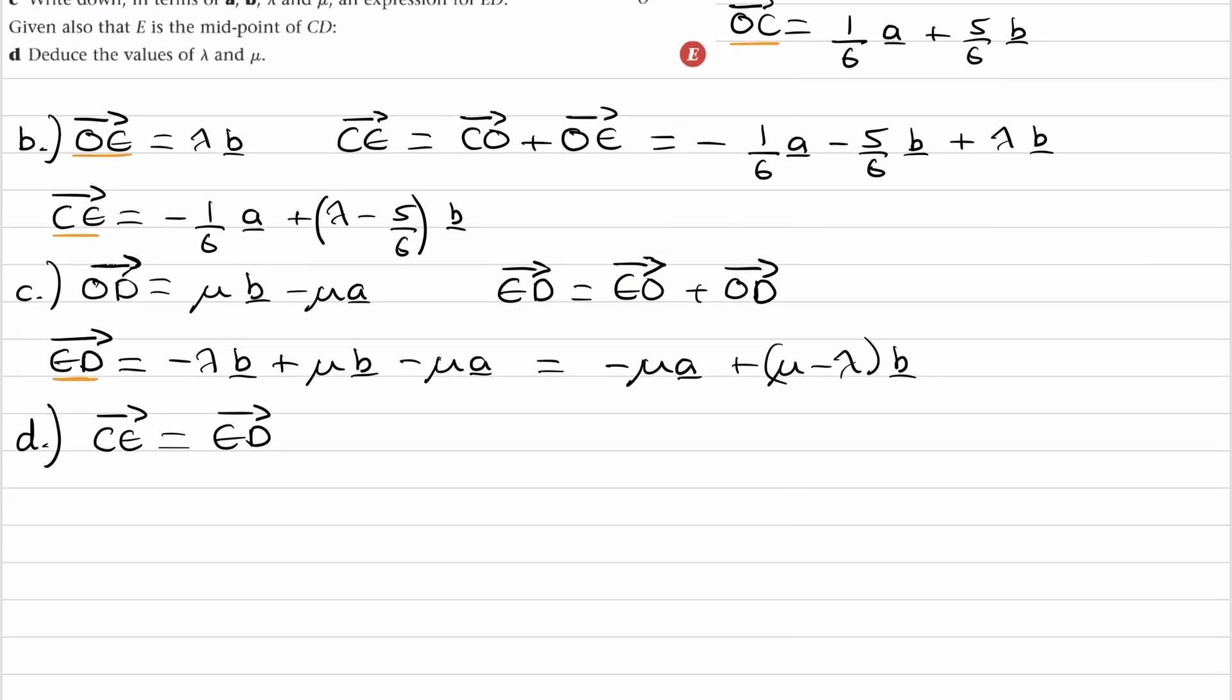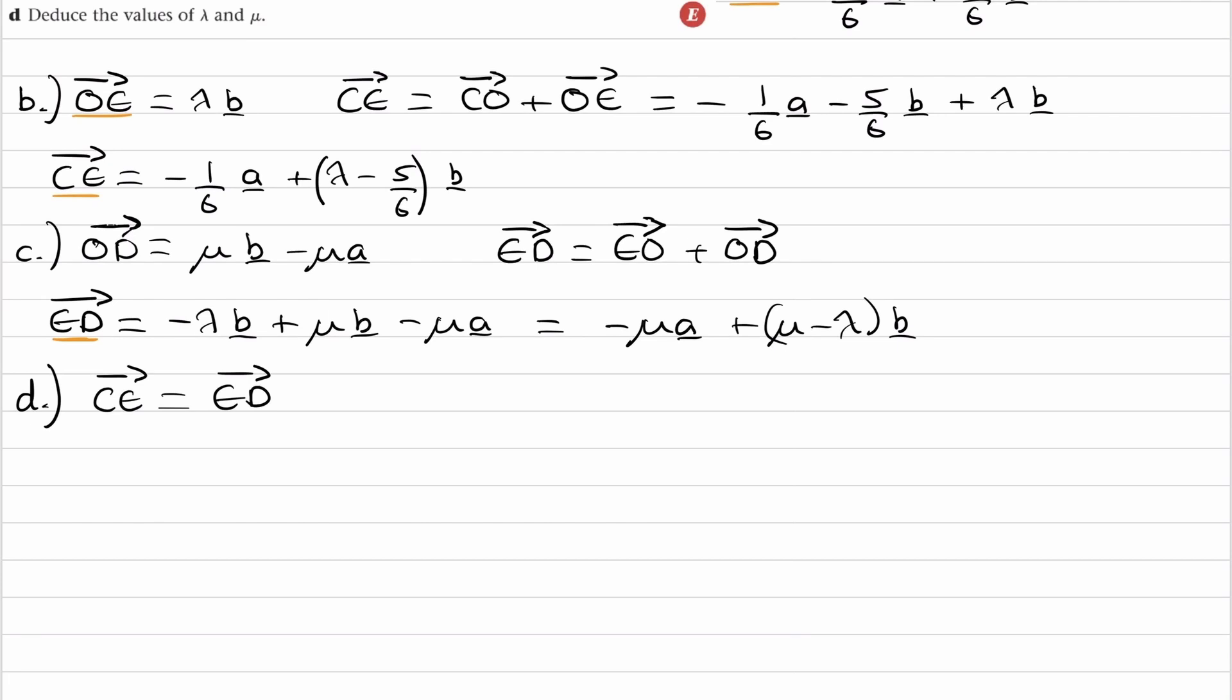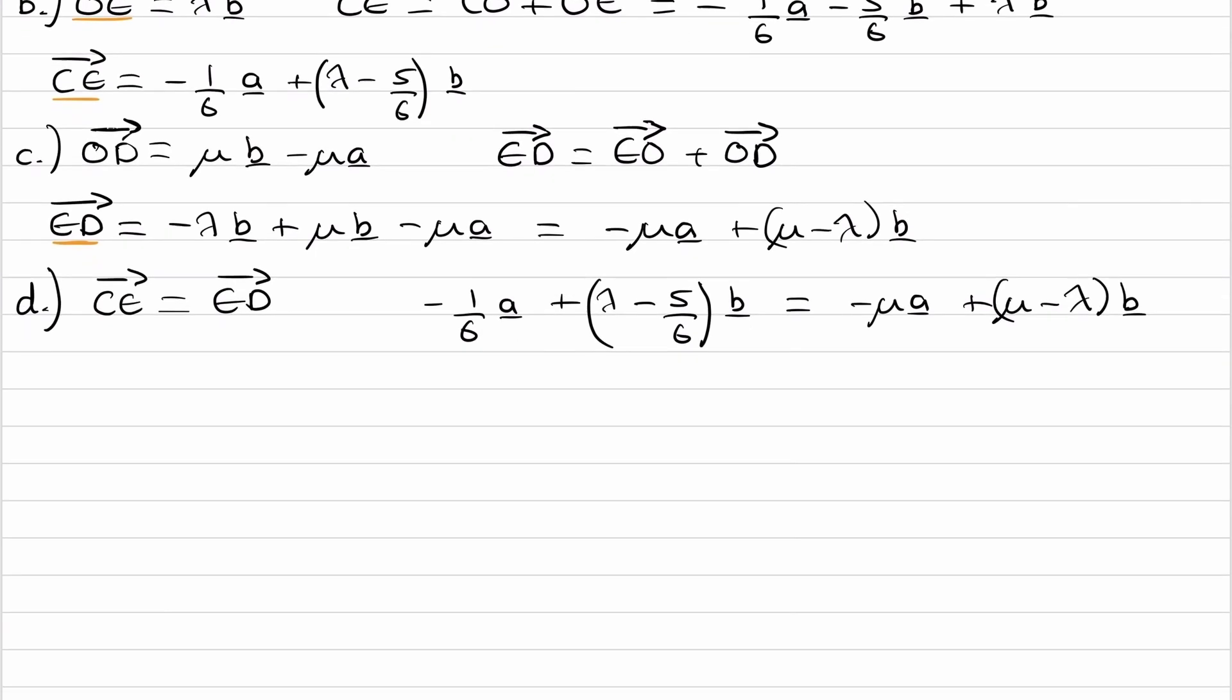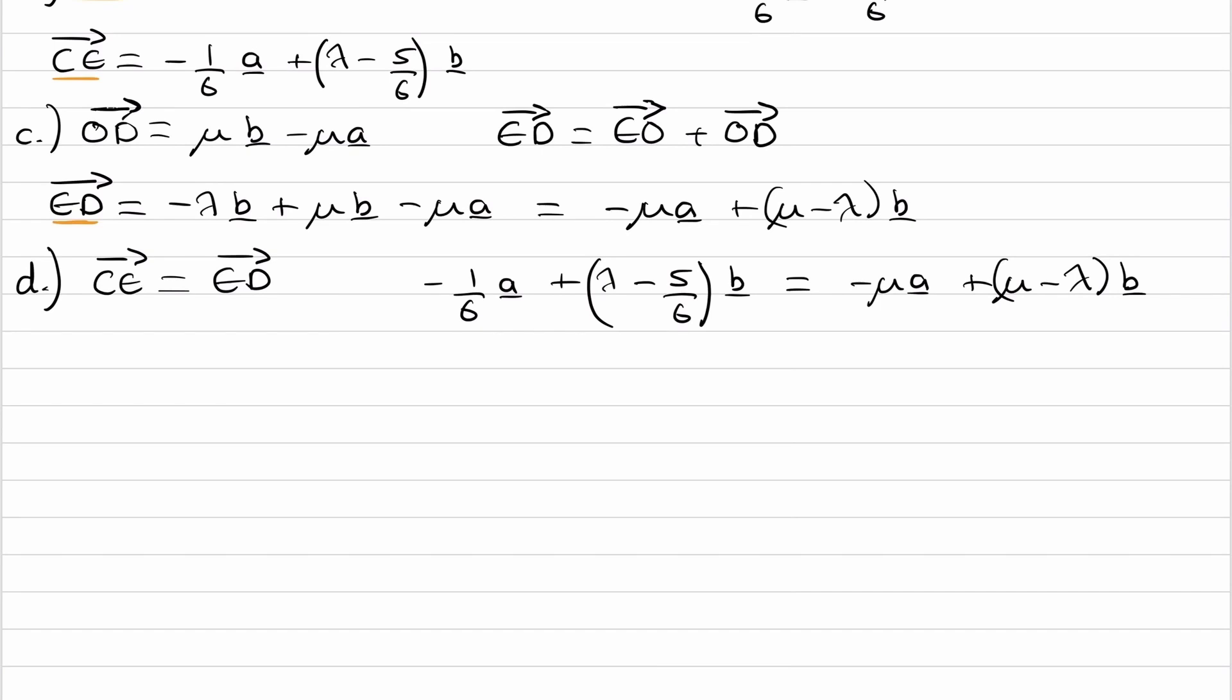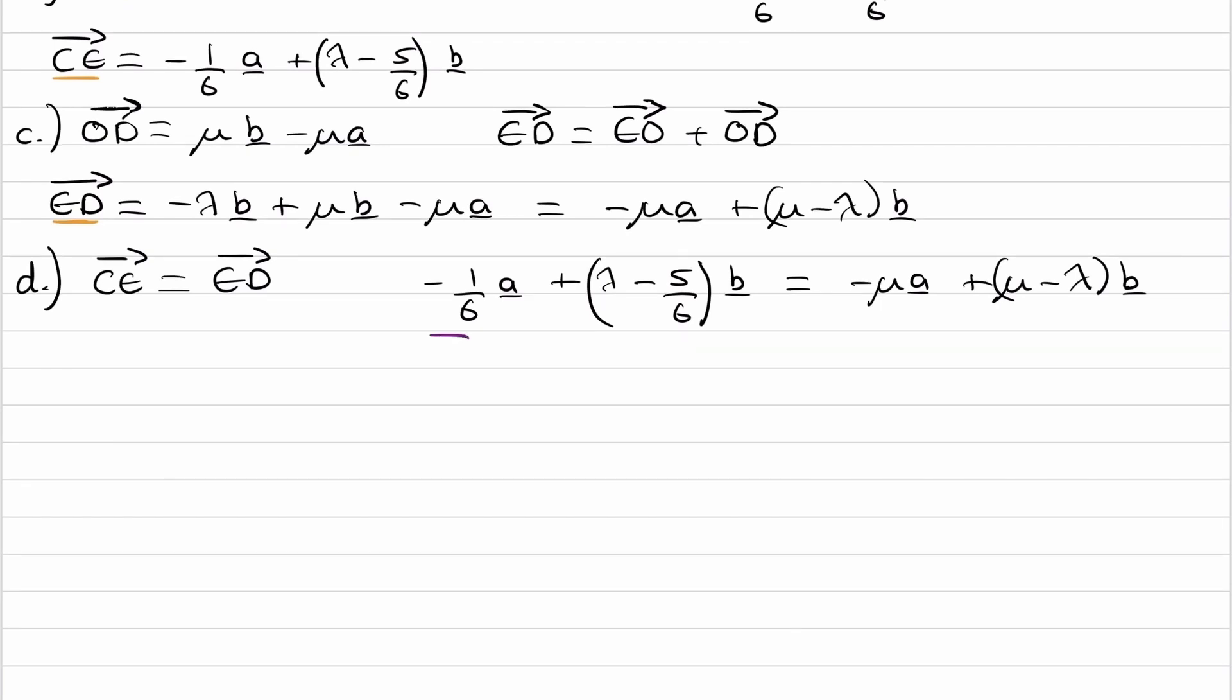So we have minus a sixth a plus lambda minus five sixth of b, and that's equal to ED, which is minus mu a plus mu minus lambda times b. So we can equate the coefficients. So the coefficients of a would equal, and the coefficients of b would also equal.